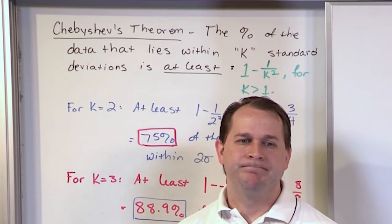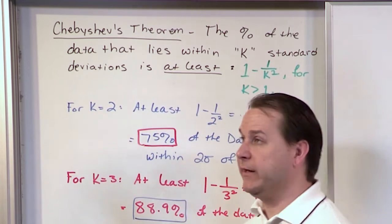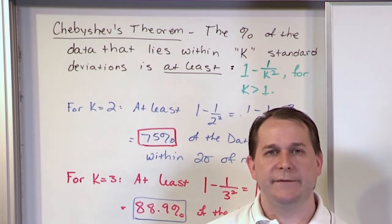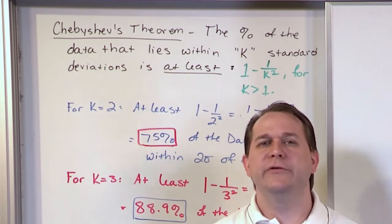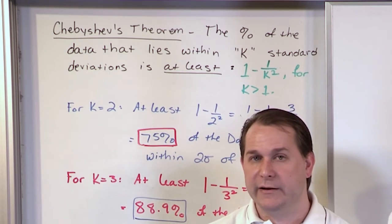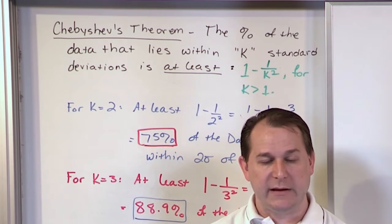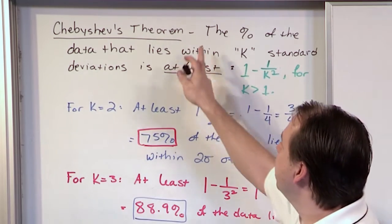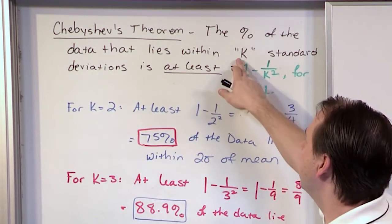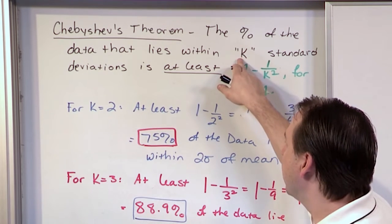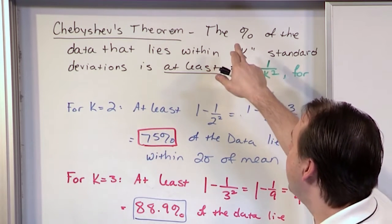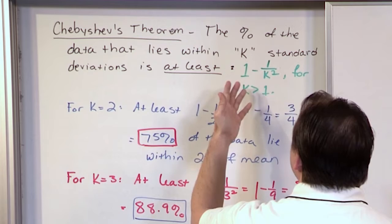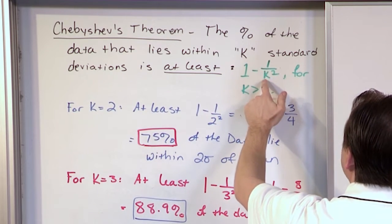What's below the theorem statement is a couple of quick examples. Usually when we're trying to apply these empirical rules, we're trying to figure out within one, two, or three standard deviations how much percent is going to lie between those boundaries. So the way Chebyshev's theorem is written, k can be greater than 1 — so it only really works for two standard deviations, three standard deviations, four standard deviations, and so on. The percentage of the data that lies within it is 1 minus 1 over k squared.